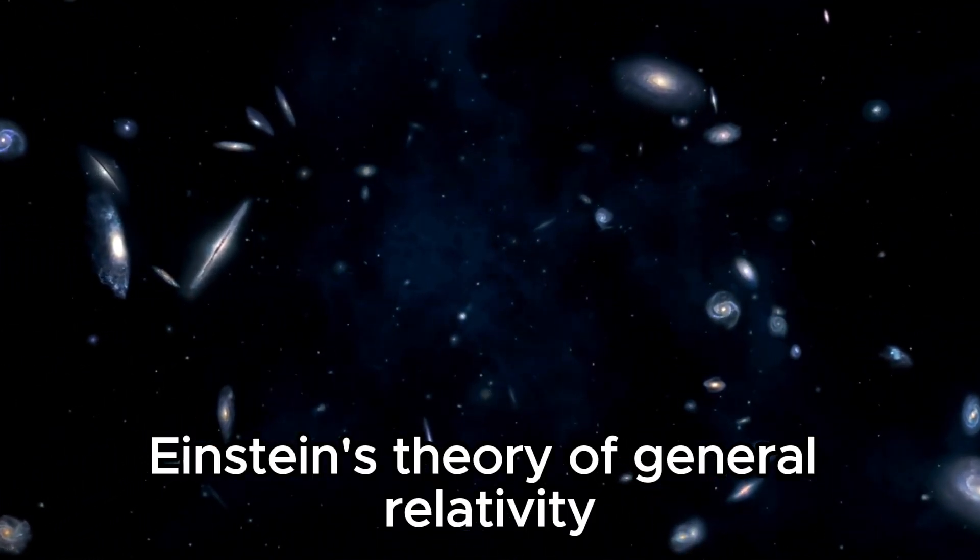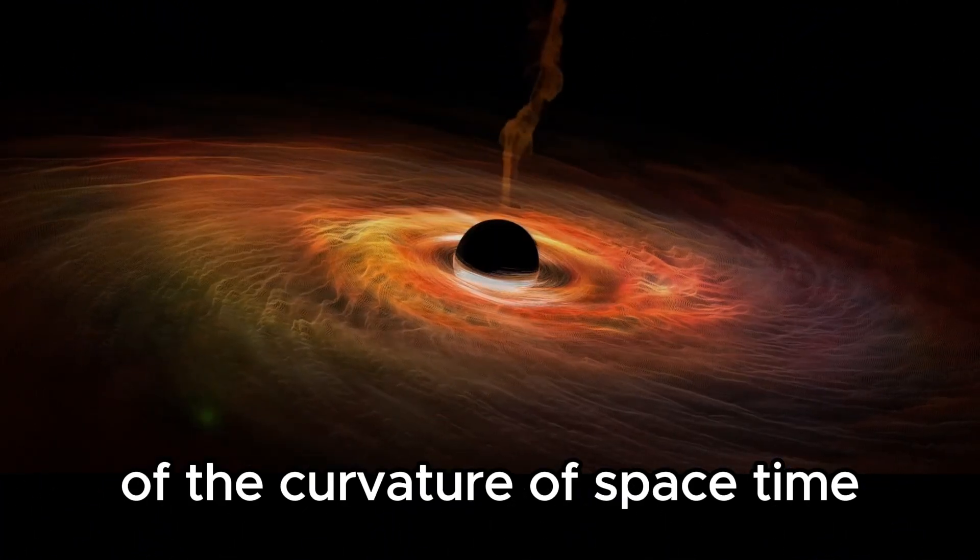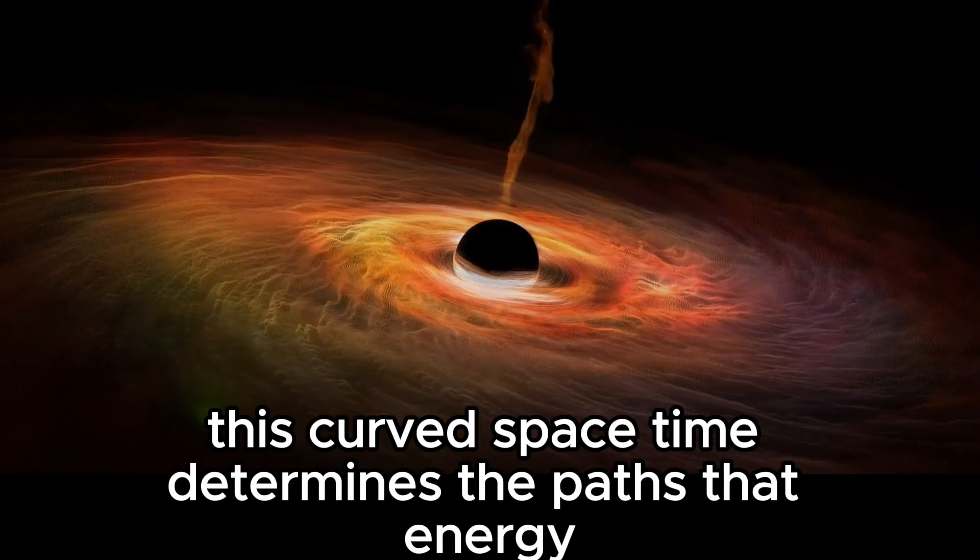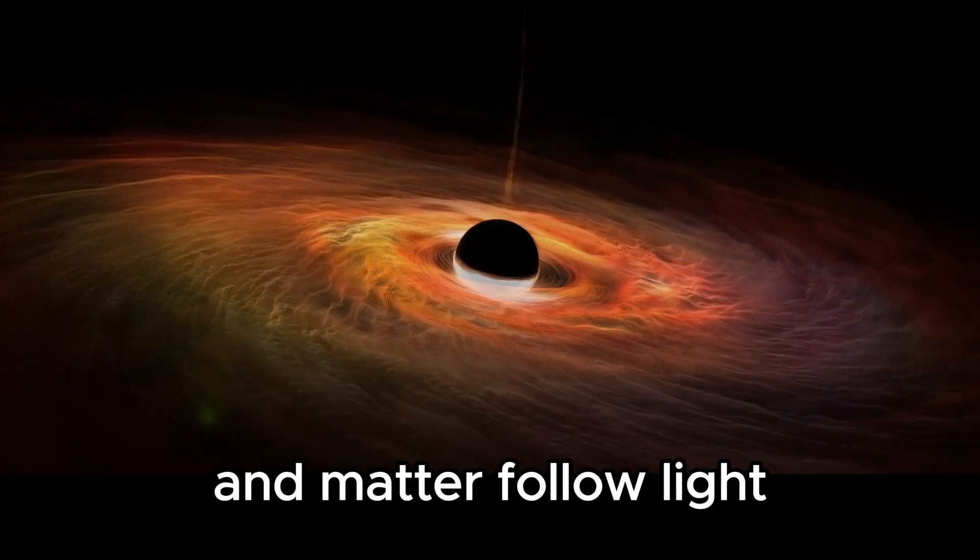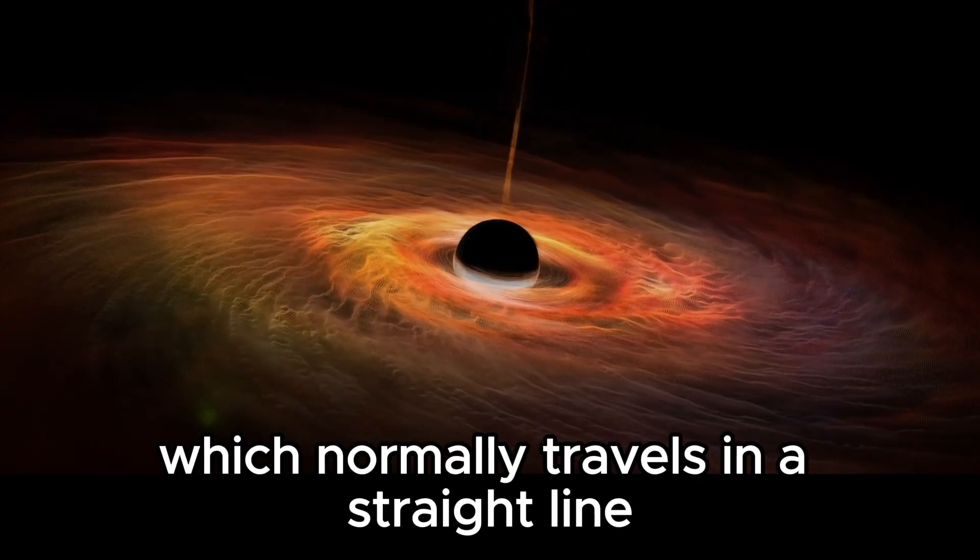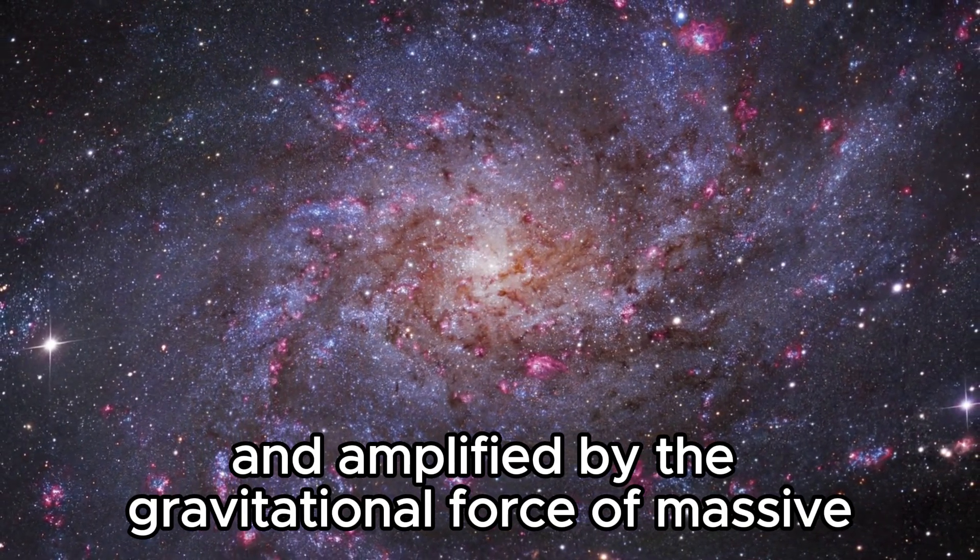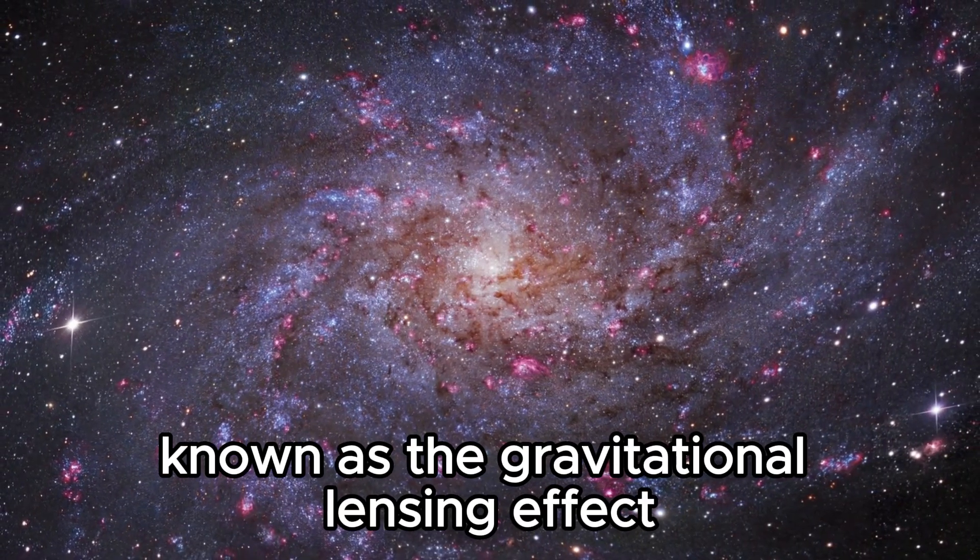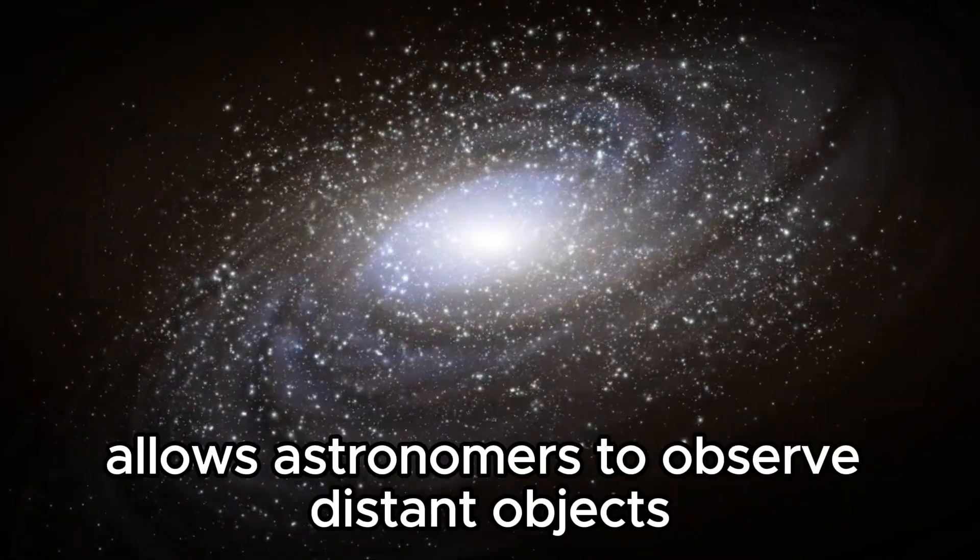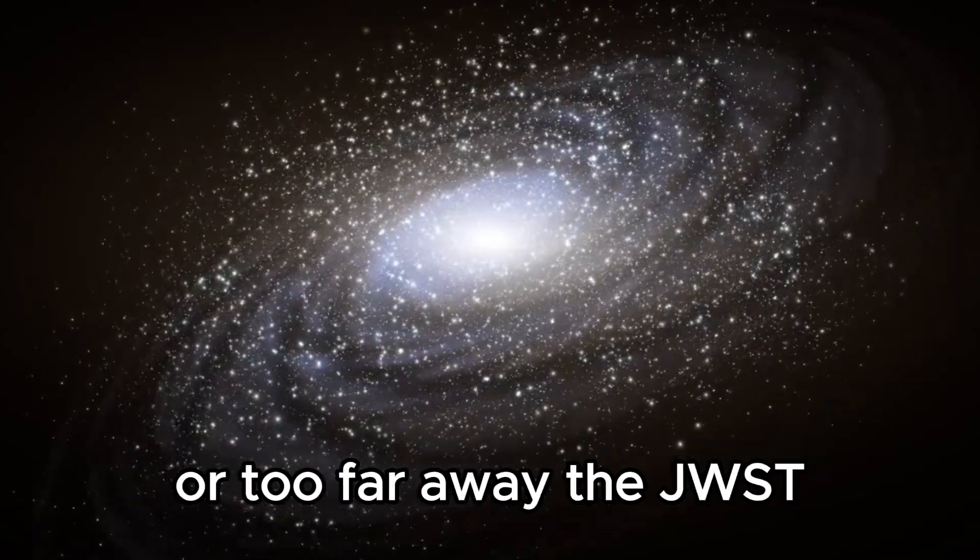Einstein's theory of general relativity explains that gravity is the result of the curvature of spacetime by matter and energy. This curved spacetime determines the paths that energy and matter follow. Light, which normally travels in a straight line, can be deflected and amplified by the gravitational force of massive objects. This phenomenon, known as the gravitational lensing effect, allows astronomers to observe distant objects that would otherwise be too faint or too far away.